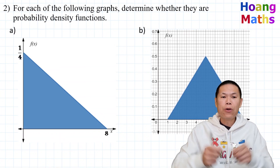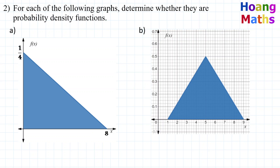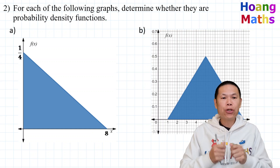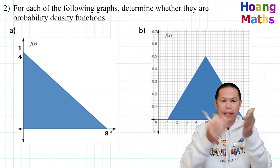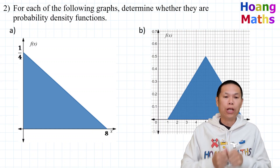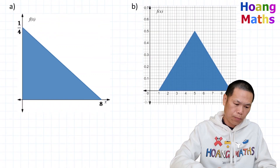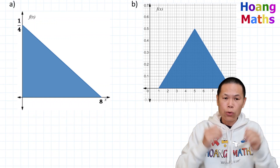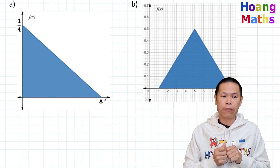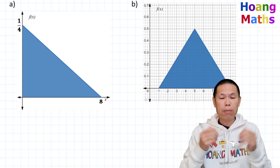Please pause the video and try this one yourself. Hi there, I'm back. How did you go? Part eight — we just need to work out the area of a triangle. If it is equal to one, it is a probability density function; otherwise it will not be a probability density function.